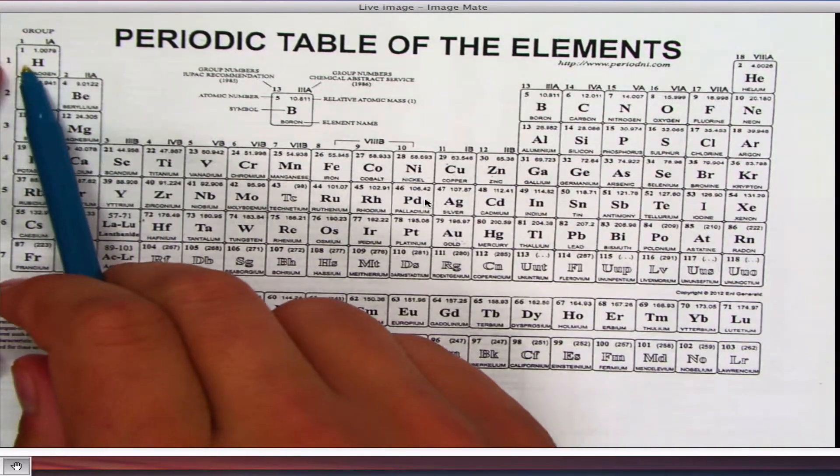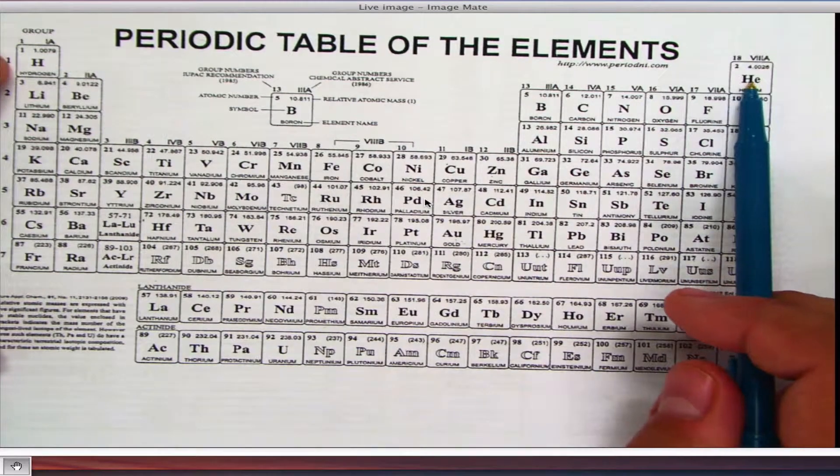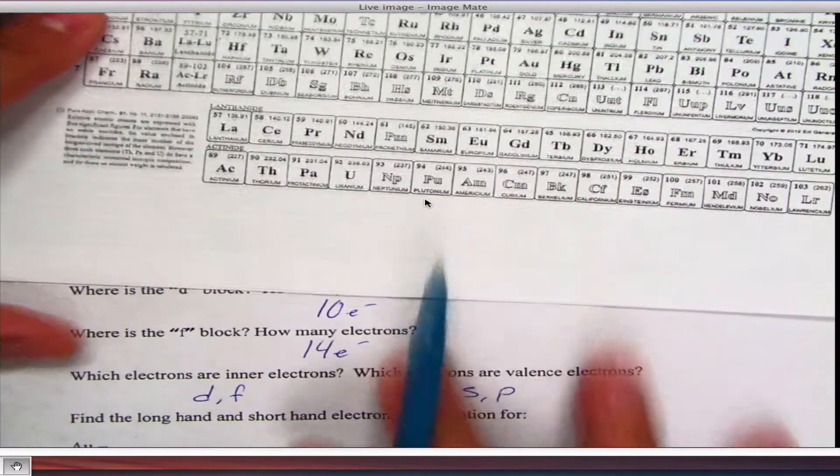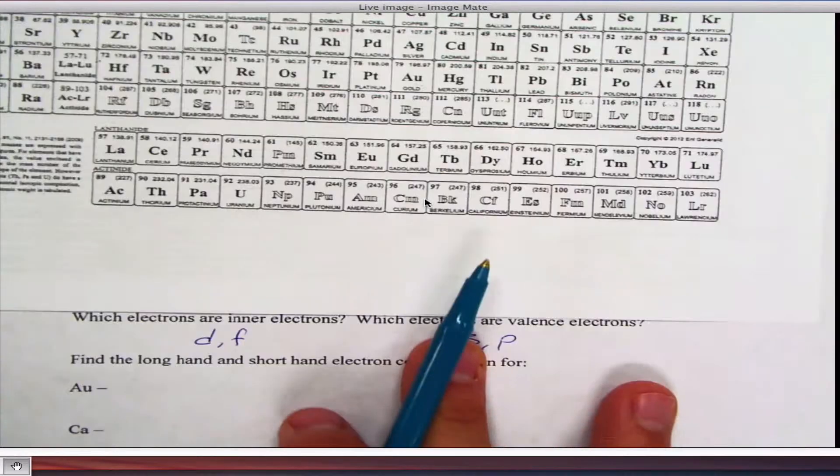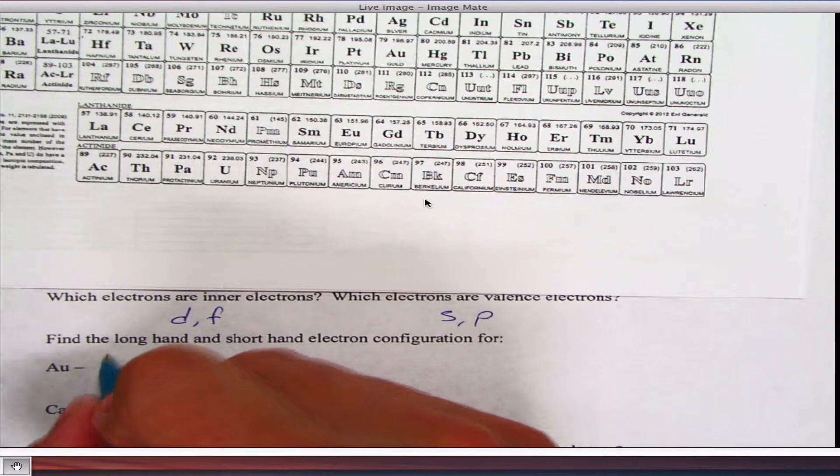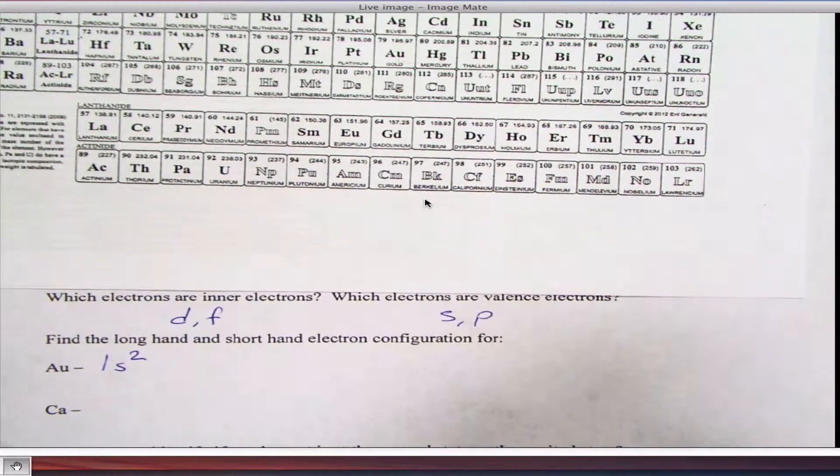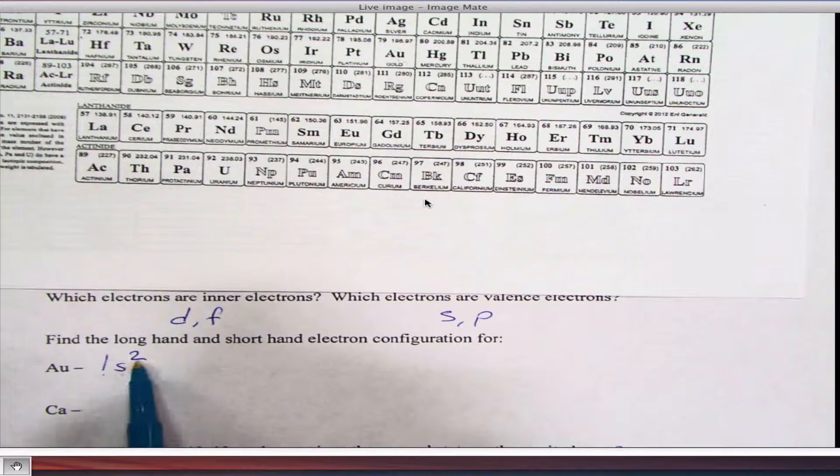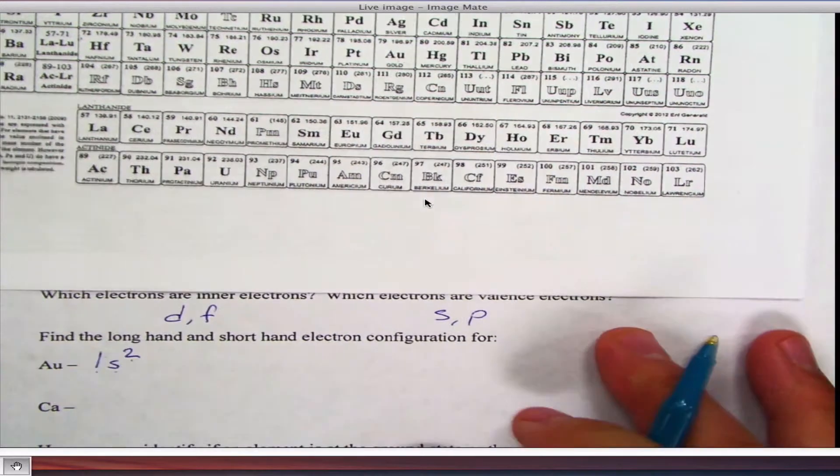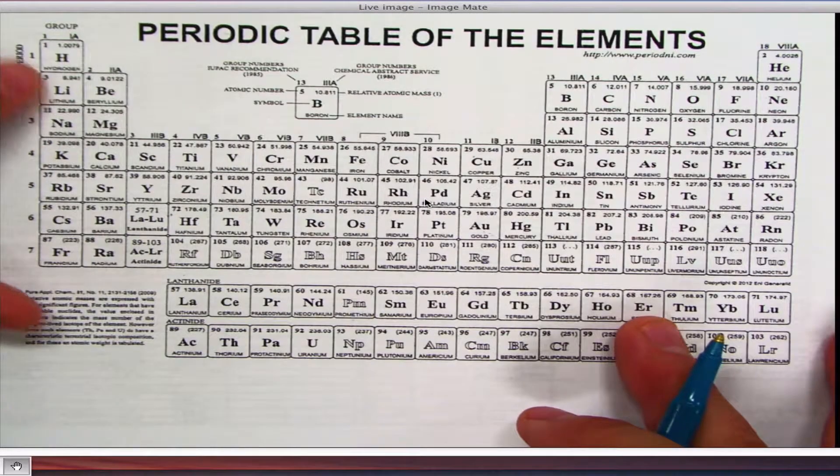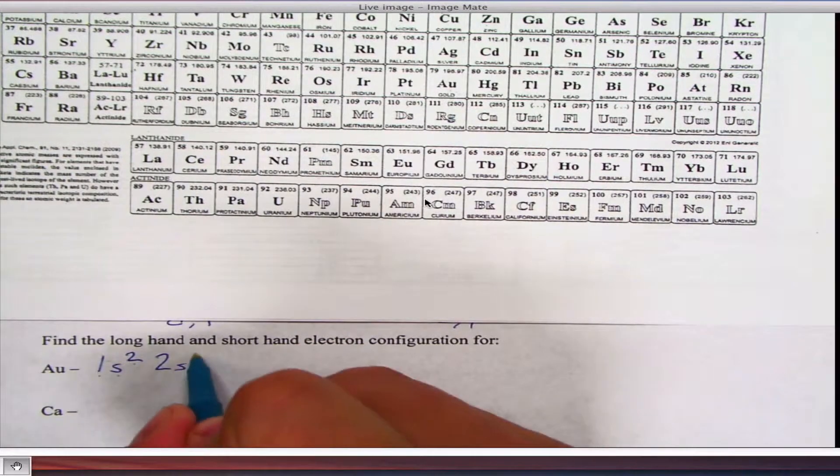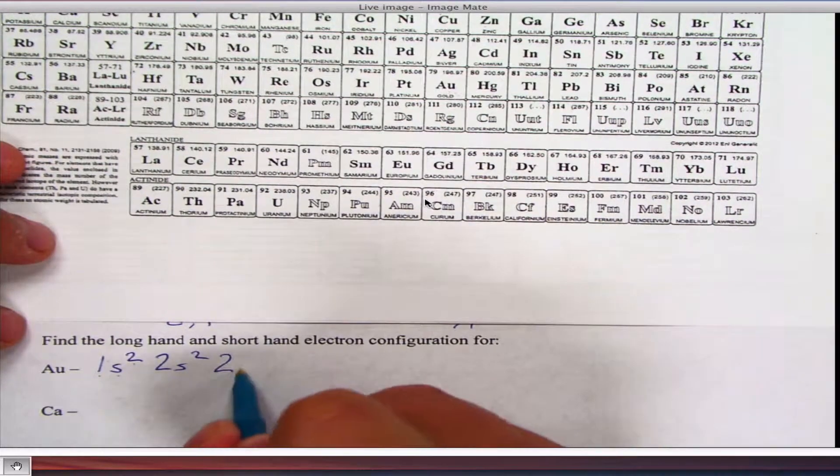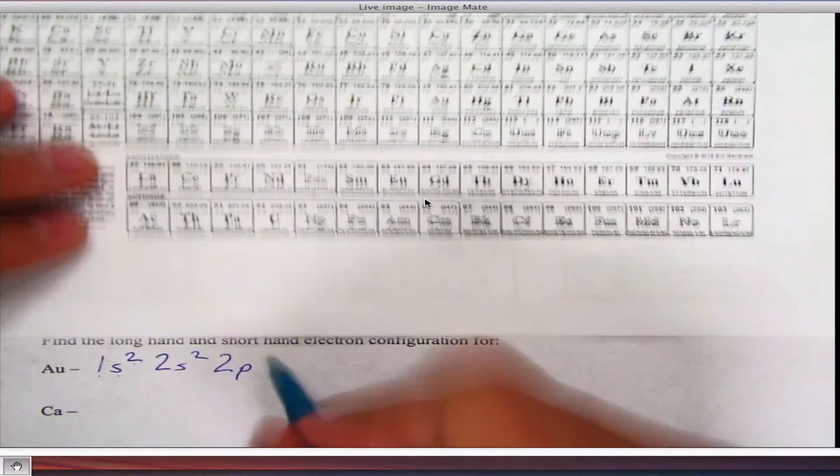So first row, 1S1, 1S2. So I write down here. So I summarize that first row, 1S2. First row, S block, 2 electrons. Now I do my second row. 2S1, 2S2. Summarize it. Get to the end of the block, 2S2. Then I go to my P block. Still in the second row, 2P. And I went all the way across it. And there's six of them. 2P6. Second row, P block, 6 electrons.